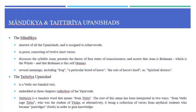The Mandukya is the shortest of all Upanishads and is assigned to the Atharva Veda. It is in prose, consisting of twelve short verses. It discusses the syllable Aum, presents the theory of four states of consciousness, and asserts that Aum is Brahman, which is the whole, and that Brahman is the self or Atman. The root word Manduka in Sanskrit has several meanings including frog, a particular breed of horse, the soul of the horse's hoof, or spiritual distress.